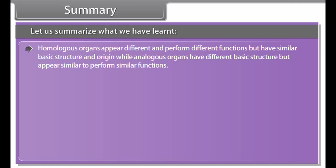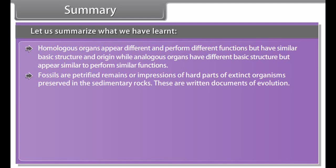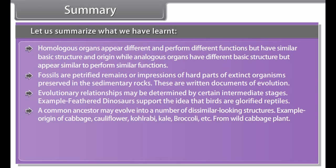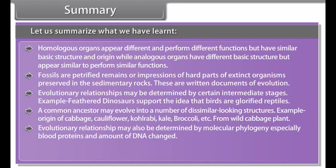Main sources of variations are mutations, recombination of genes, and genetic drift. Mutations are sudden, large, and inheritable changes in genetic material, acting as evolutionary agents to create and maintain variations in a population. Natural selection operates through differential reproduction, spreading useful genetic variability to more members of the population and increasing gene frequency. Genetic drift is the random change in gene frequency by chance fluctuations, increasing the frequency of certain characters having little survival advantage.